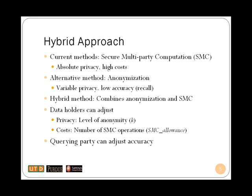Existing methods for private record linkage are based on secure multi-party computation, referred in short as SMC. While these methods are probably secure against disclosure, associated costs due to cryptographic operations are too high. An alternative approach would be utilizing anonymization methods that allow private information release. However, anonymization methods require sanitizing all individual identifying information which are vital for the record linkage process. Consequently, using only anonymous versions of the data sets results in low accuracy.